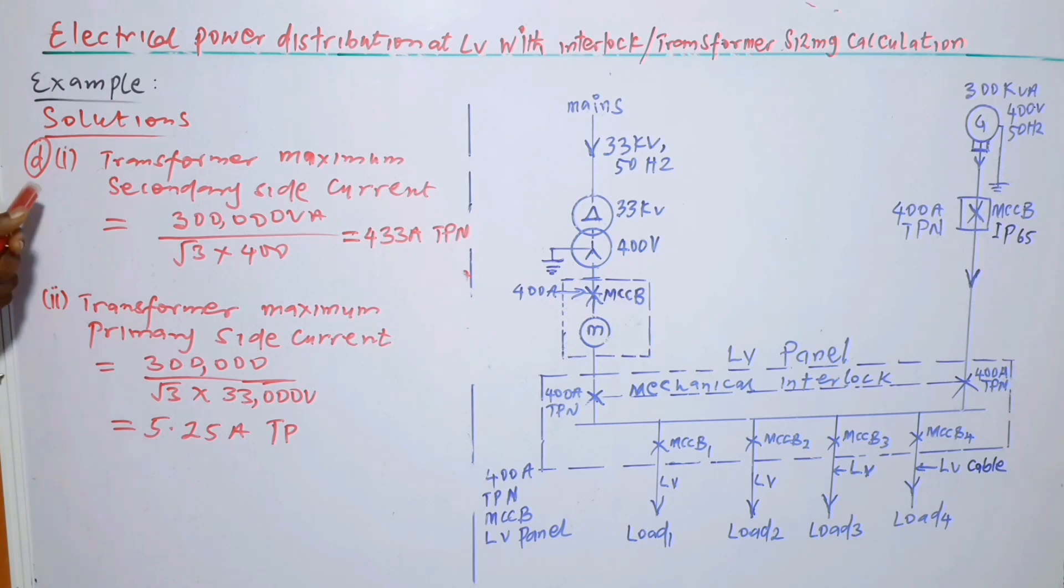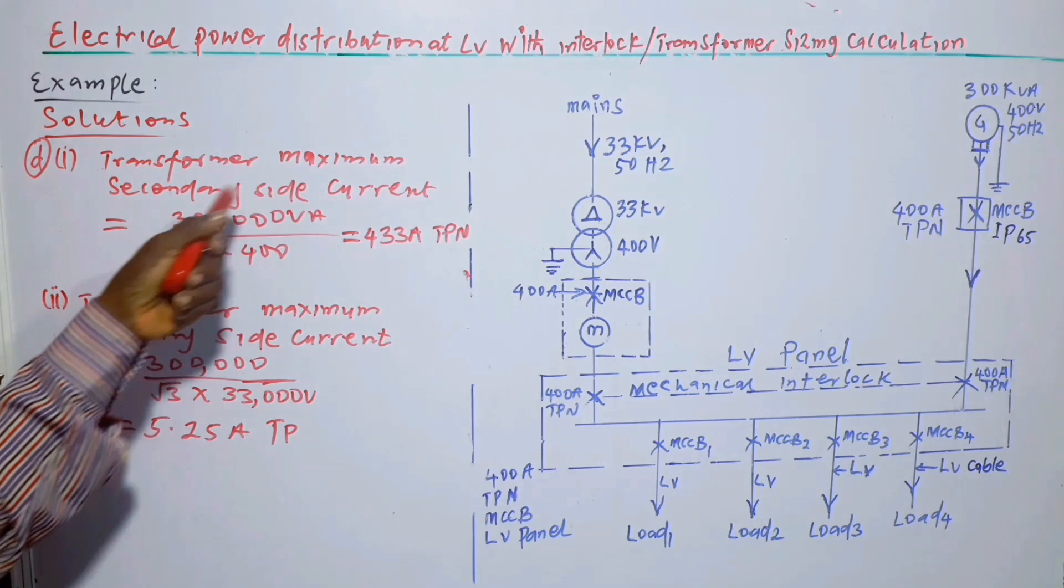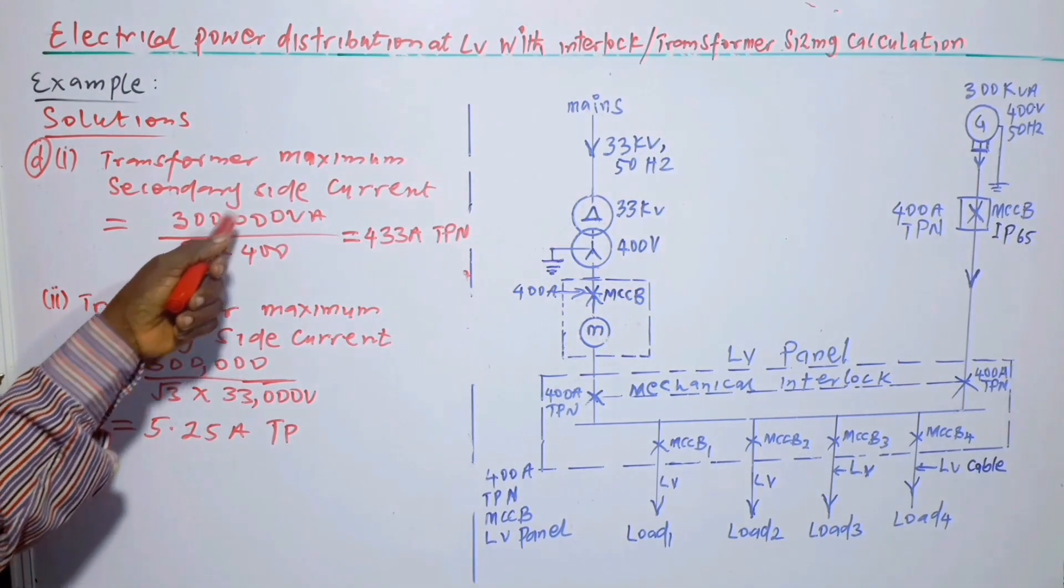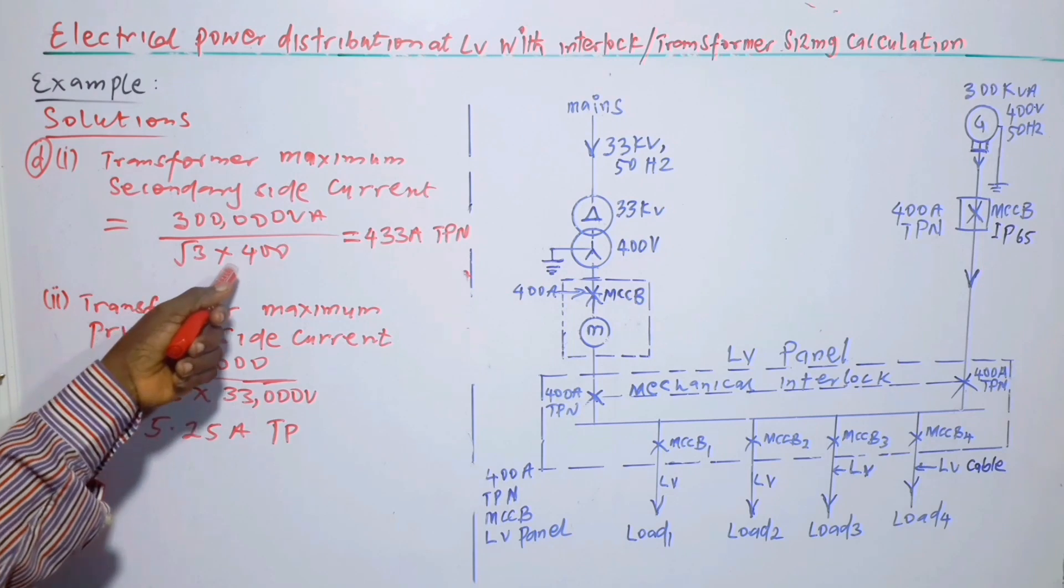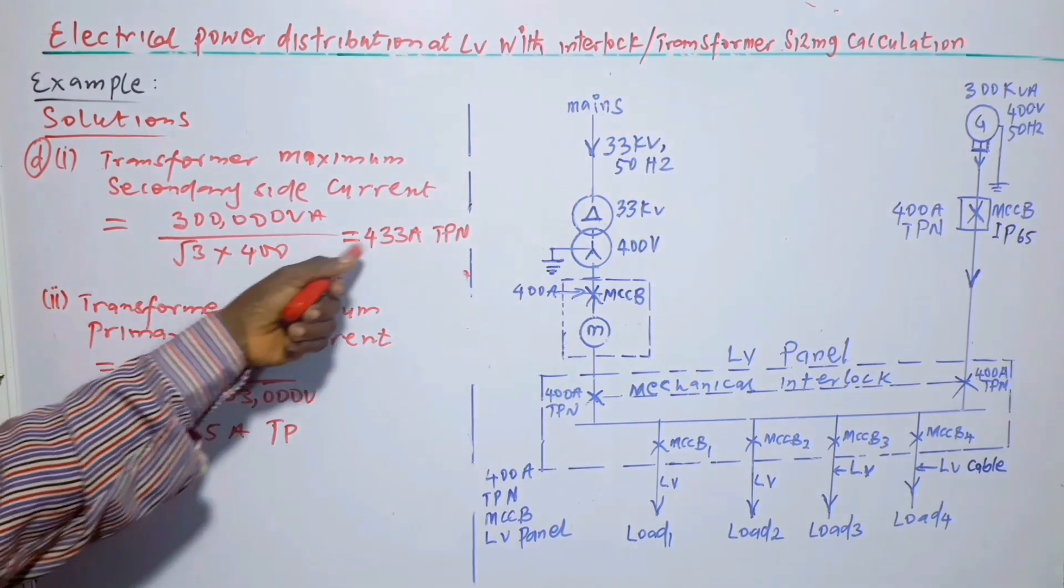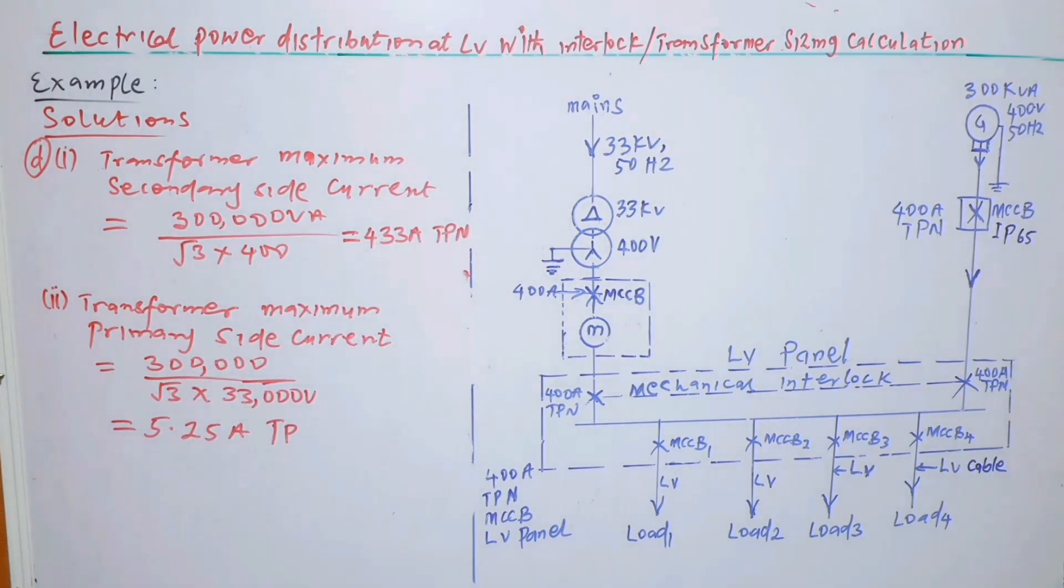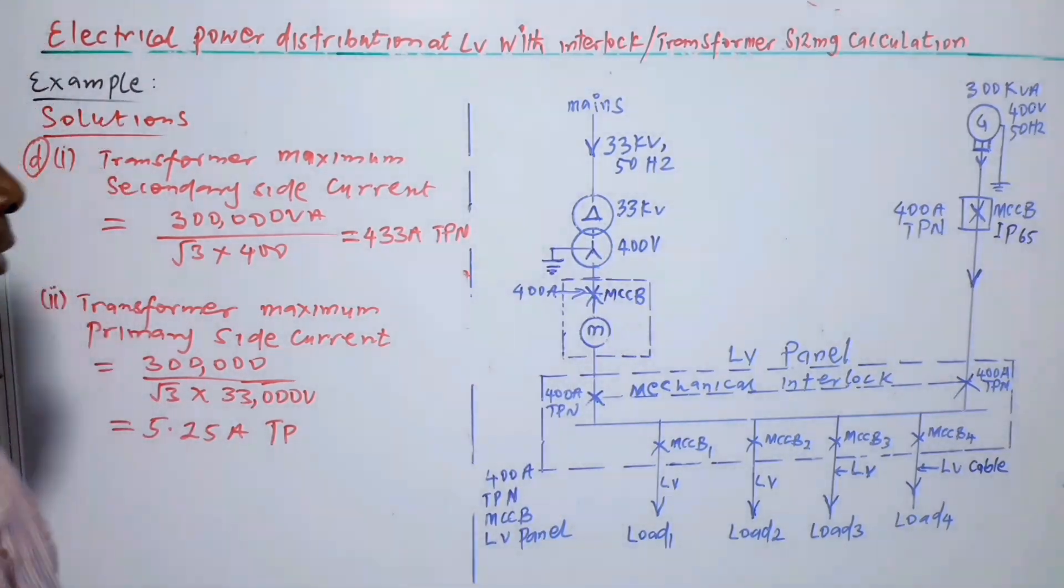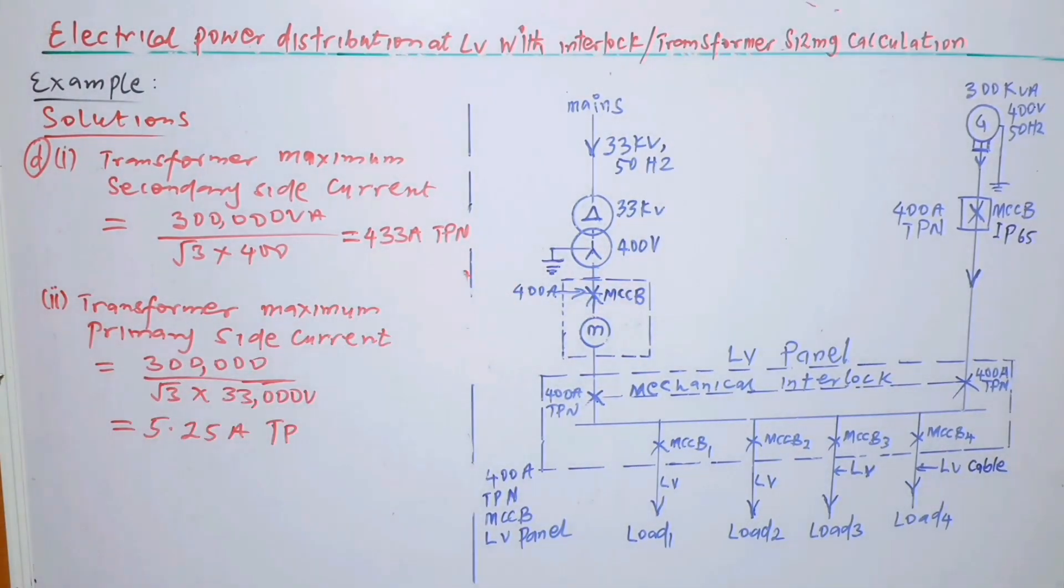So D part, one. Transformer maximum secondary side current is equal to 300,000 VA divided by root 3 times 400. And the answer is 433 A TPN. So we are talking of this star side. That's the secondary side.